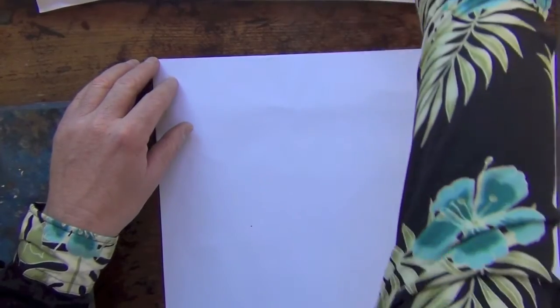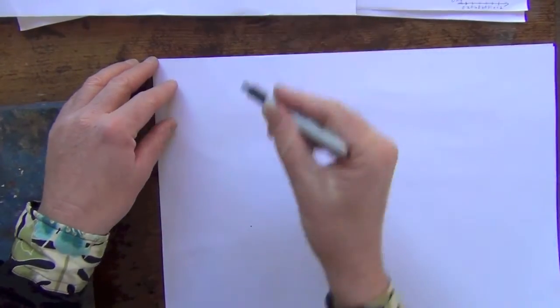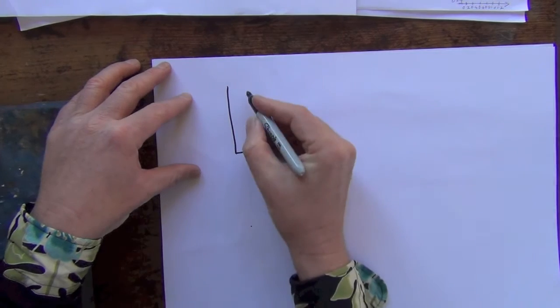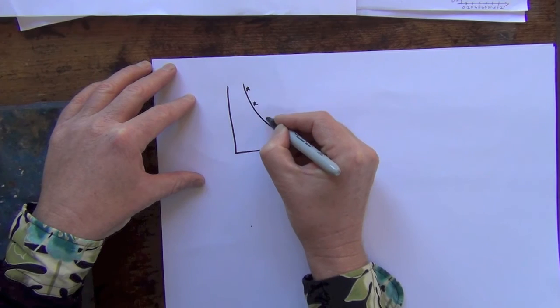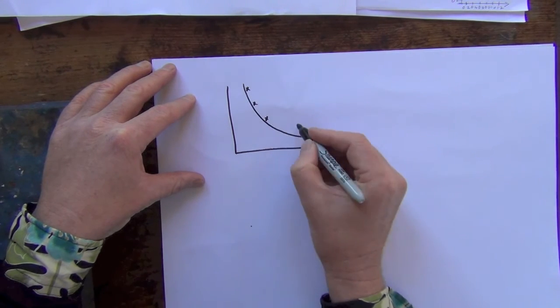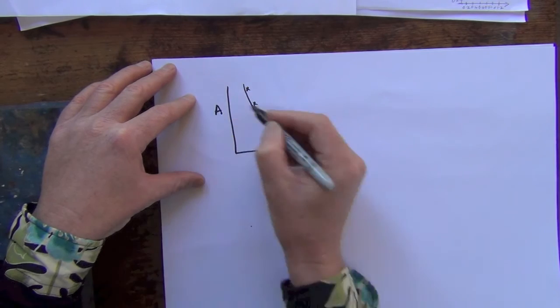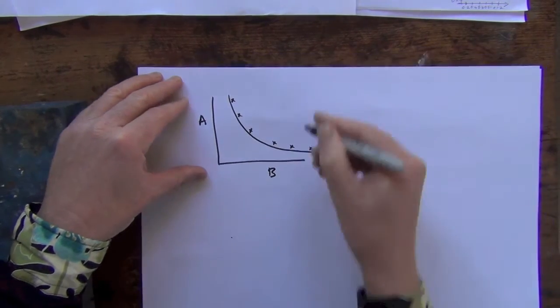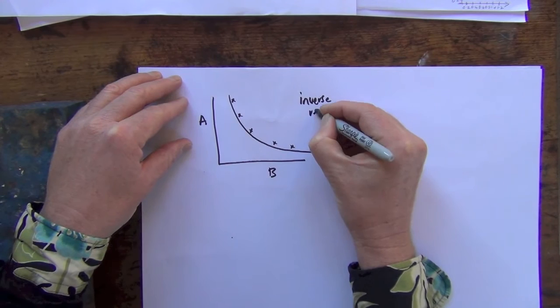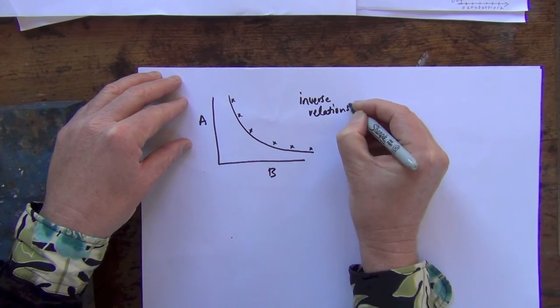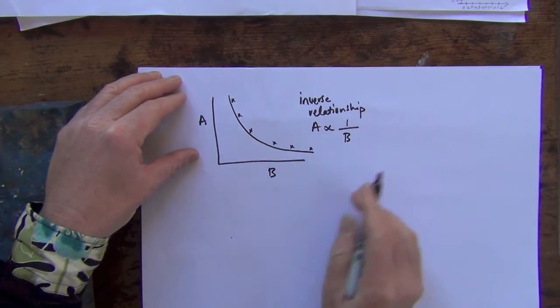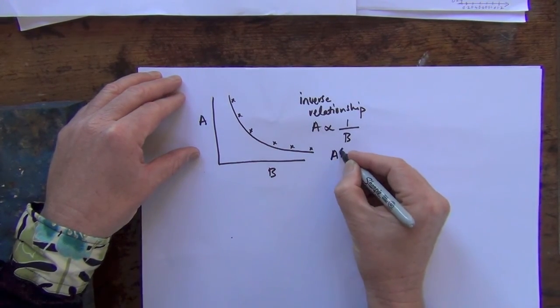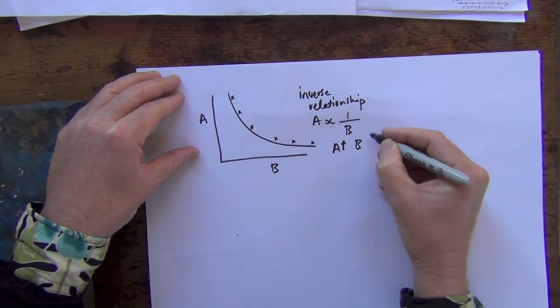The other types of relationships that we can get is this, and here the graph drops down like that. It basically drops and flattens. And here, say this was A, this was B, and this is what we call an inverse relationship. And here A is proportional to 1 over B. And what this basically means is A increases, B does the opposite, it goes down. And if B increases, A goes down.